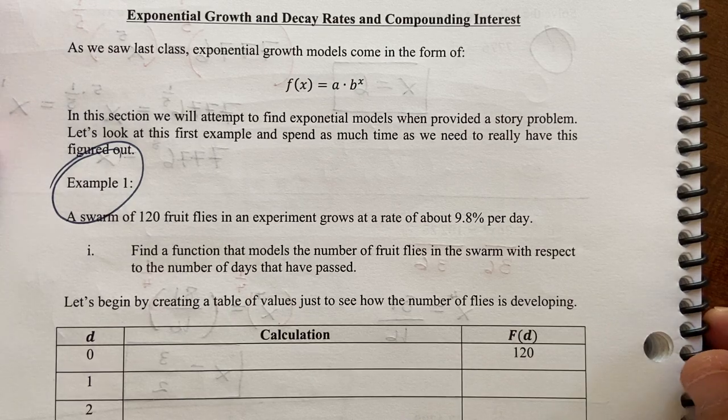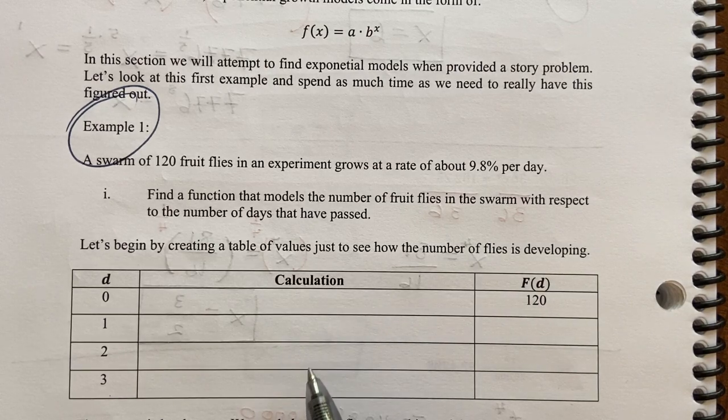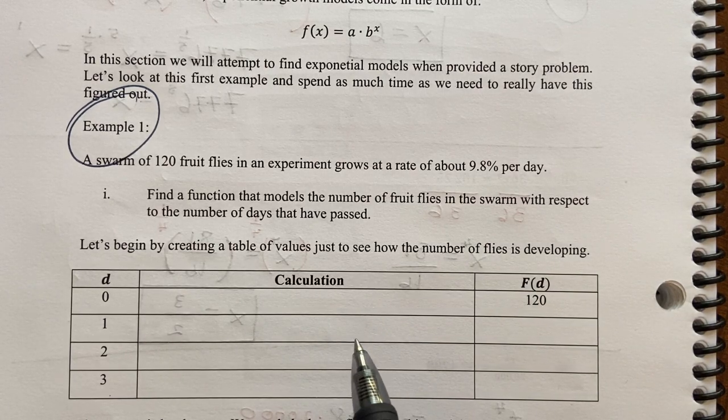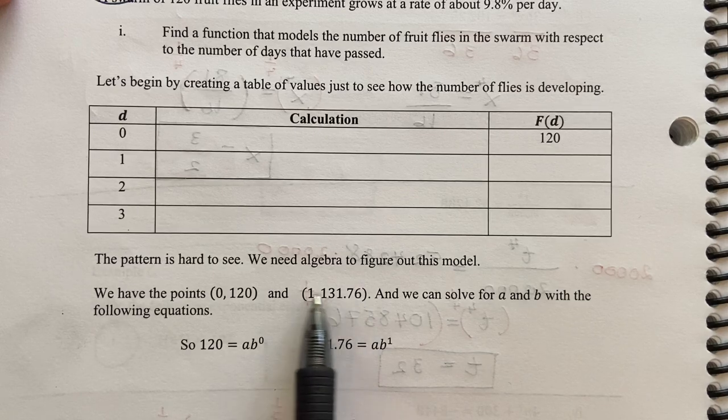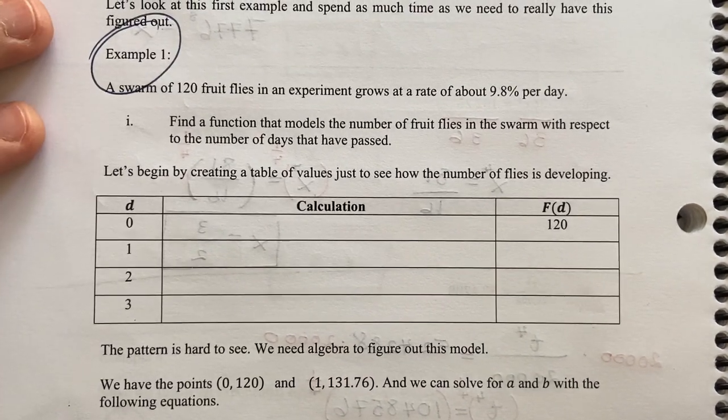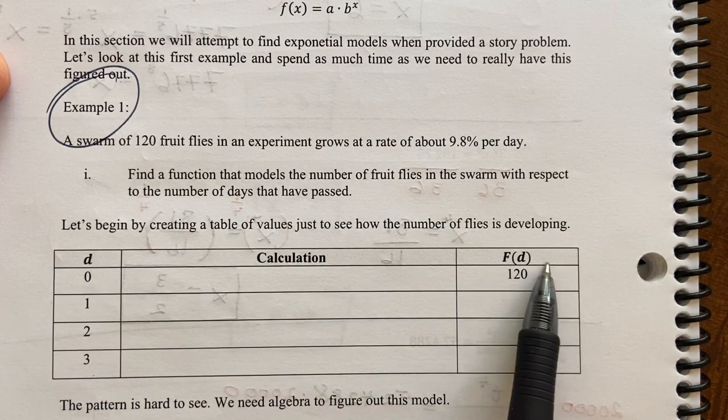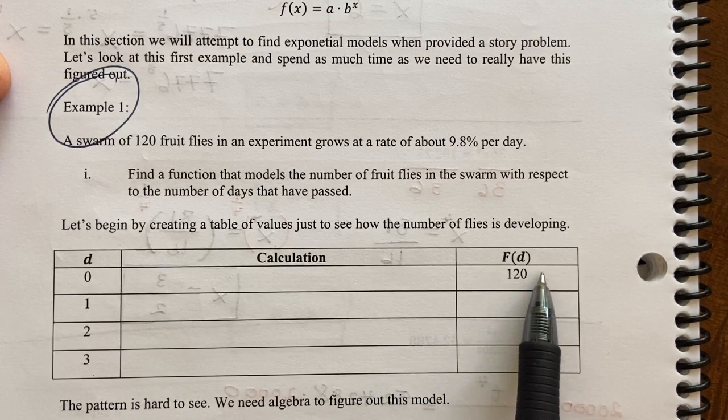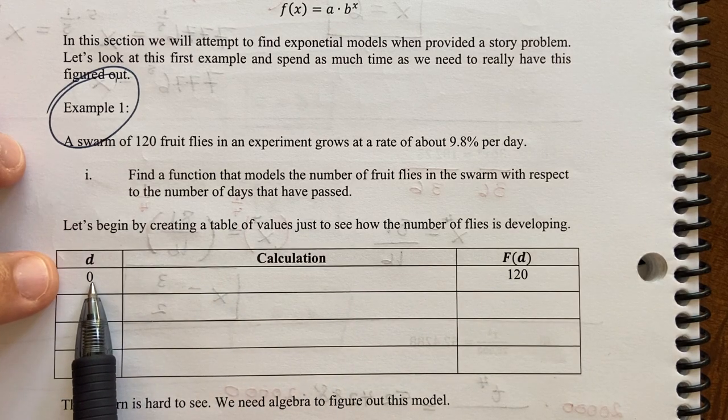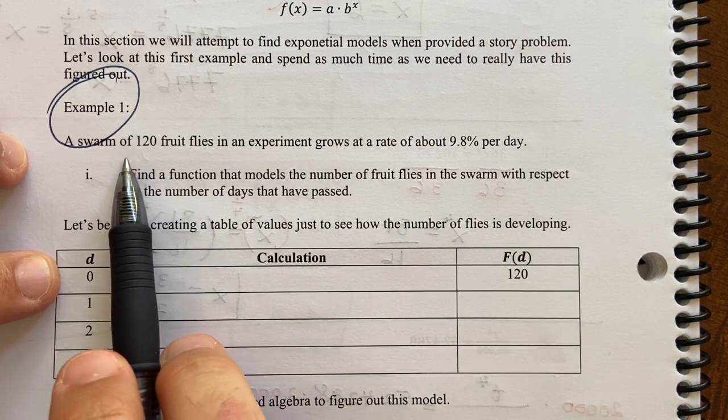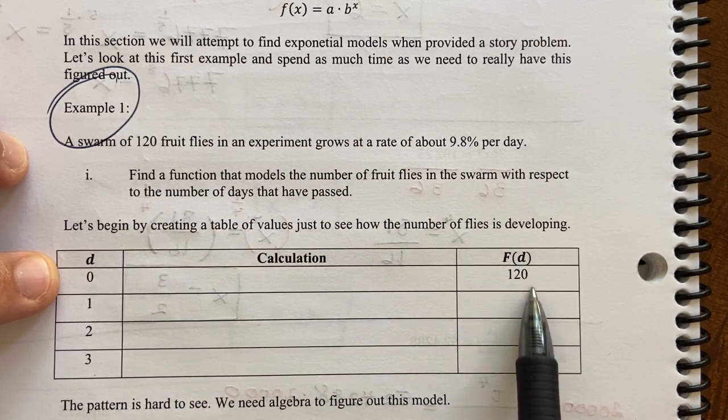Okay, so what I've set up is a table. I'll show you a table way of finding this model, just looking for a pattern. And then I'll show you a more algebraic way. So zero days after finding the swarm, no calculation needed. There are 120 fruit flies. This is our column for how many are predicted.